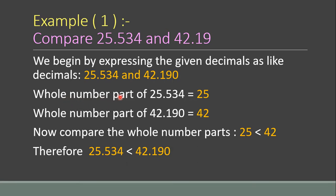The second step is to compare the whole number parts. First, you compare the decimal numbers by using their whole number part — the digits before the decimal point. Before the point we have 25 and 42. The whole number part of 25.534 is 25 and of 42.190 is 42. We can easily compare these: 25 is lesser than 42, so therefore 25.534 is less than 42.190.